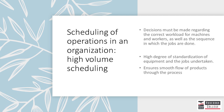In high-volume scheduling, decisions must be made regarding the correct workloads for machines and workers, as well as the sequence in which the jobs are done. In high-volume systems, there is a high degree of standardization of the equipment and the jobs undertaken. An example is seen in the motor vehicle manufacturing industry, where some parts can fit any type of model. The main objective is to ensure the smooth flow of products through the process, ensuring the highest possible use of machines, people, and materials.